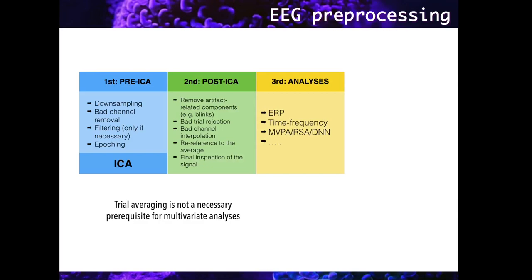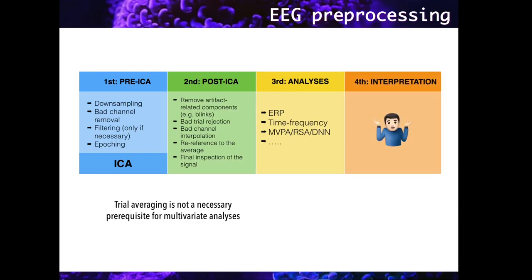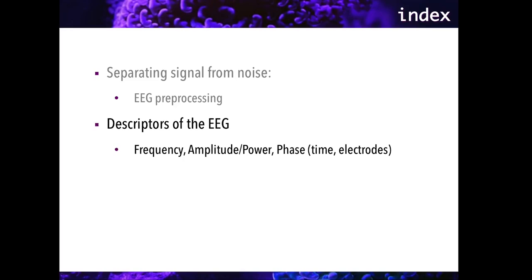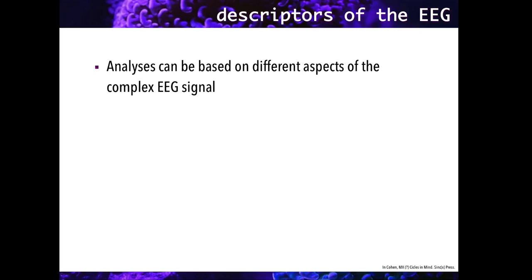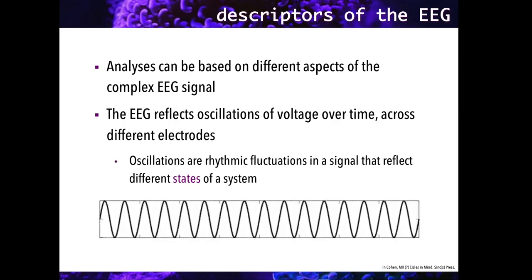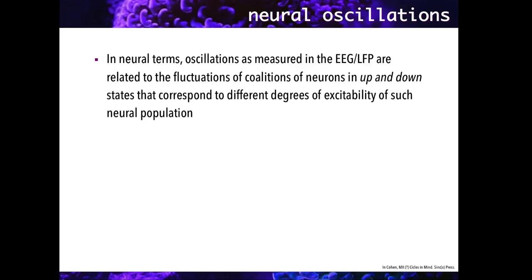Now, with a clean signal, we can do whatever analysis we have planned and interpret them according to the theory and hypothesis being tested. After this short overview of signal preprocessing, we are going to go over the descriptors of the EEG signal. Multivariate analysis presents a highly flexible approach, and this in part means that it is feasible to apply them to different features of the complex EEG signal. As you all know, the EEG reflects oscillations in voltage over time across different electrodes. These oscillations are rhythmic fluctuations of a signal that reflect different states of a system.